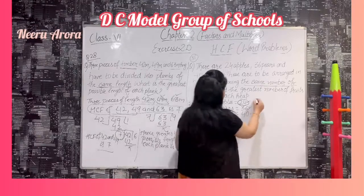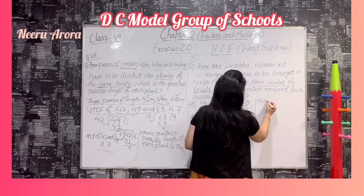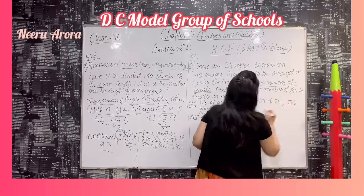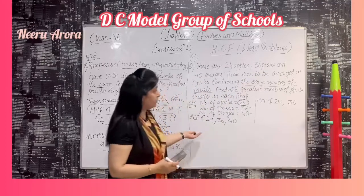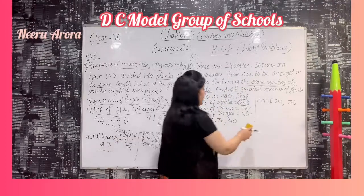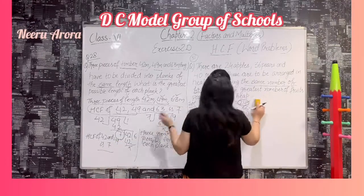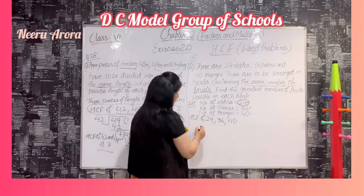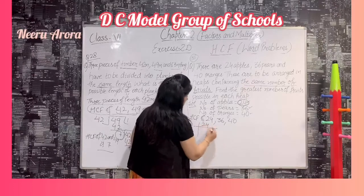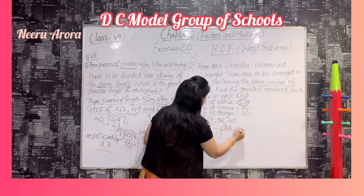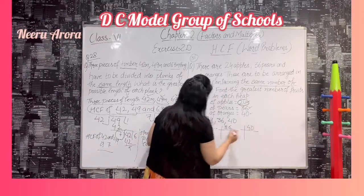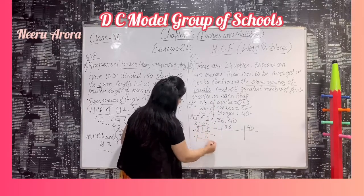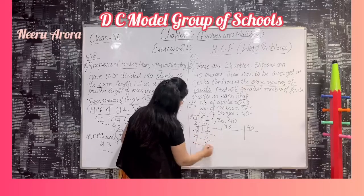First, we will use prime factorization — in the previous sum we used the long division method, so let's try prime factorization here. We find the prime factors of all three numbers: 24 = 2 × 2 × 2 × 3, and for 36 we divide by 2 to get 18, then 9, and 9 is divisible by 3 twice.